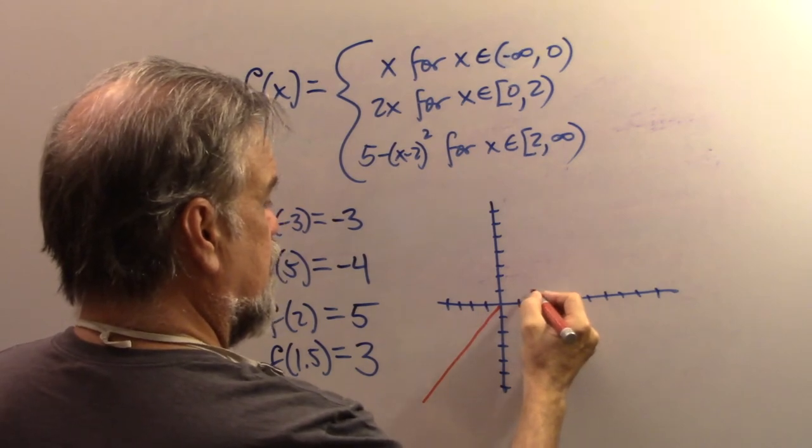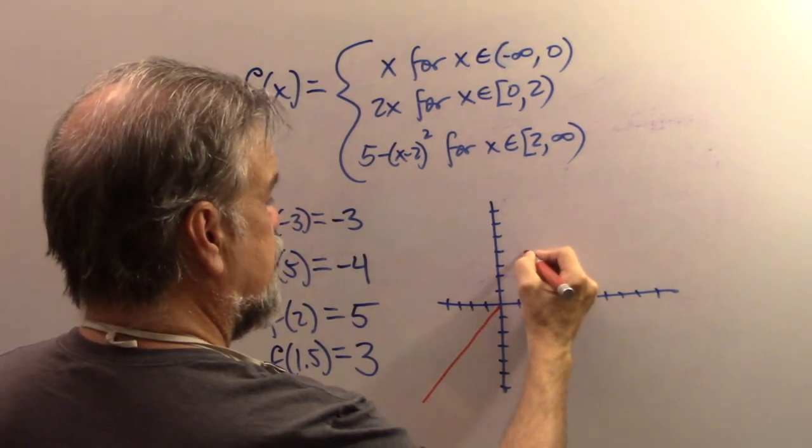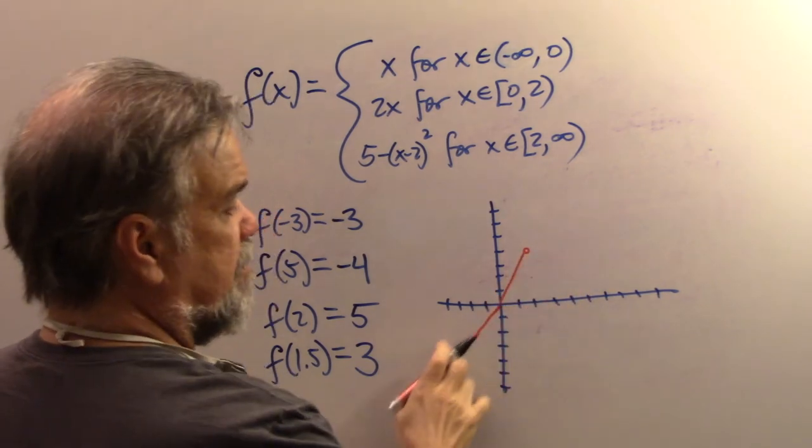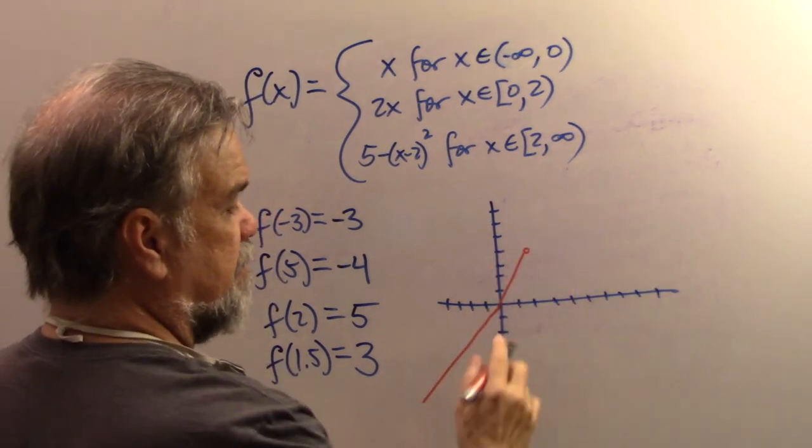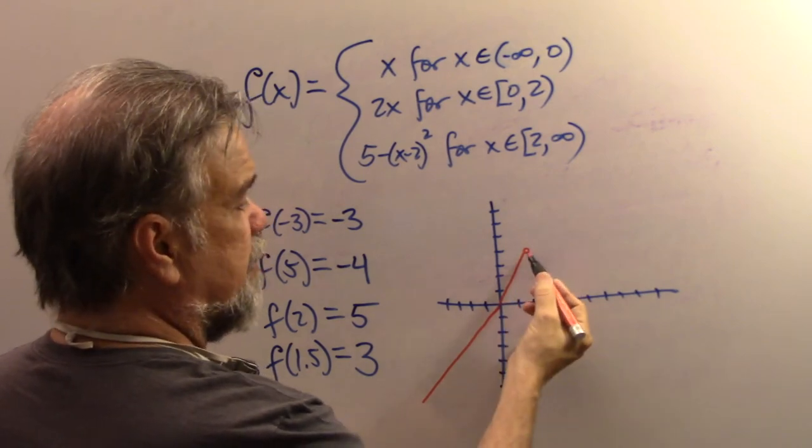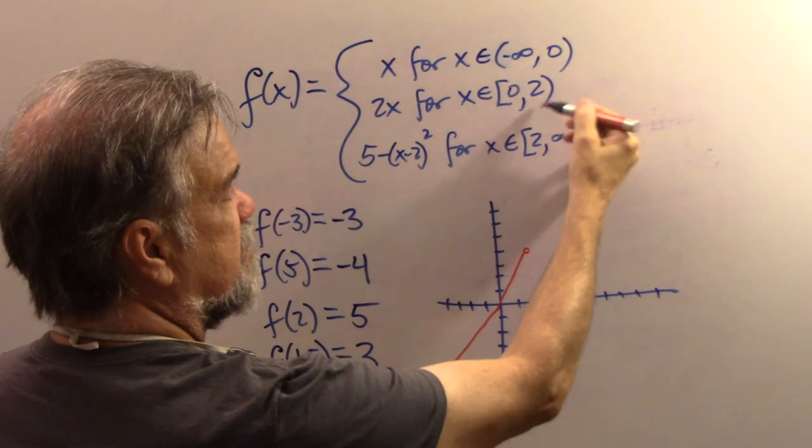And then it's 2X when X is between zero and two. So it's up to here. I'm going to put a dot there. So basically it's still linear, but the slope gets steeper between zero and two. Now notice I put an open dot there. That's because this does not include the two.